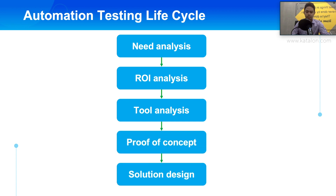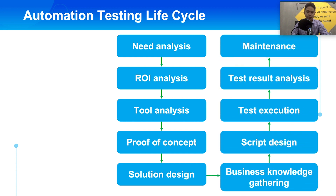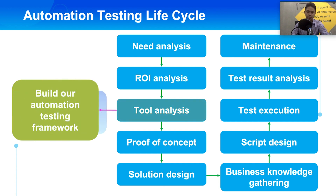After passing the POC, we go to the solution design step — this is the high level task. After that, we go to more detailed tasks such as business knowledge gathering, test scripting, test execution, test result analysis, and maintenance. So let's take a look at the tool analysis step, which is the point where we start building our automation testing framework.